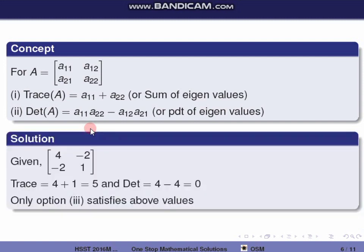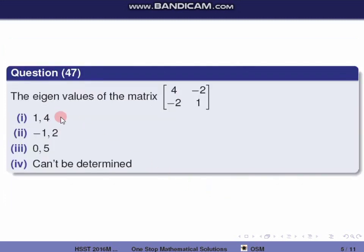Looking at the question: the trace is 4 + 1 = 5, so the sum of eigenvalues is 5. The determinant gives the product of eigenvalues: 4·1 − (−2)·(−2) = 4 − 4 = 0. So the product of eigenvalues is 0. Checking the options: sum is 5 and product is 0, so the correct option is the 3rd.